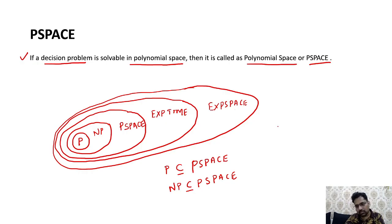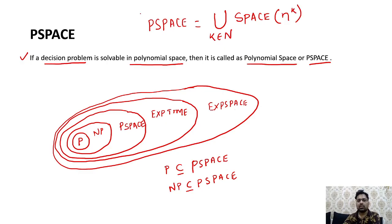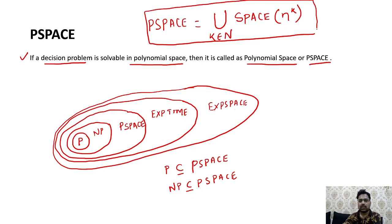Though mathematically it will be represented as PSPACE equal to, we are just representing in union format. K belongs to capital N. Here I am just writing PSPACE equal to union where K belongs to capital N space, where it will take this type of condition. Then only we are saying it represents N to the power K will be the space only.